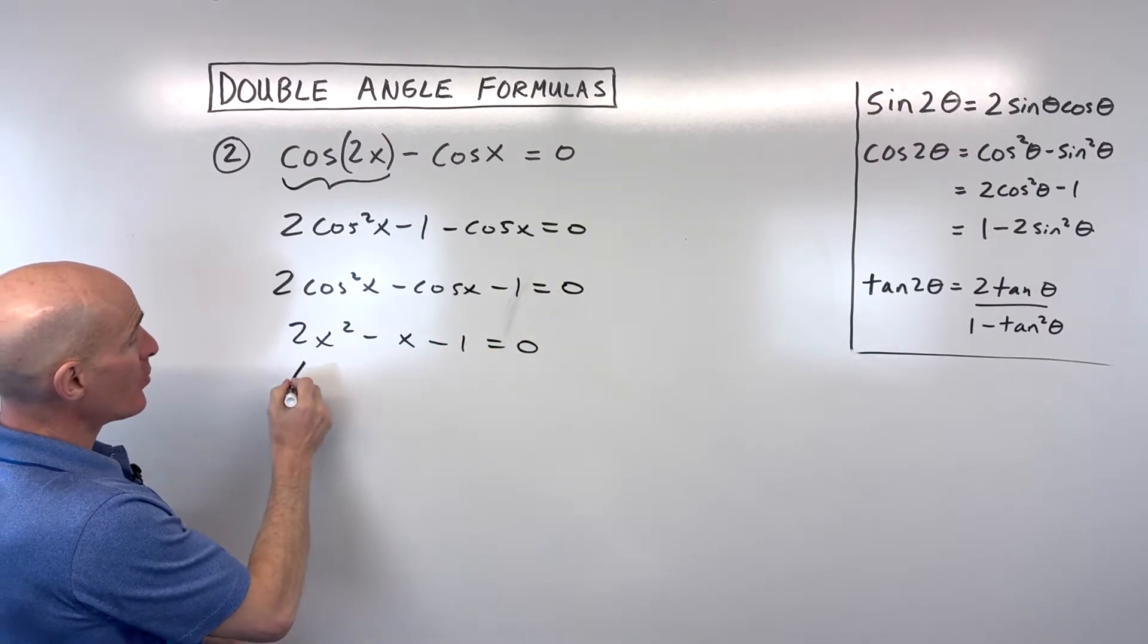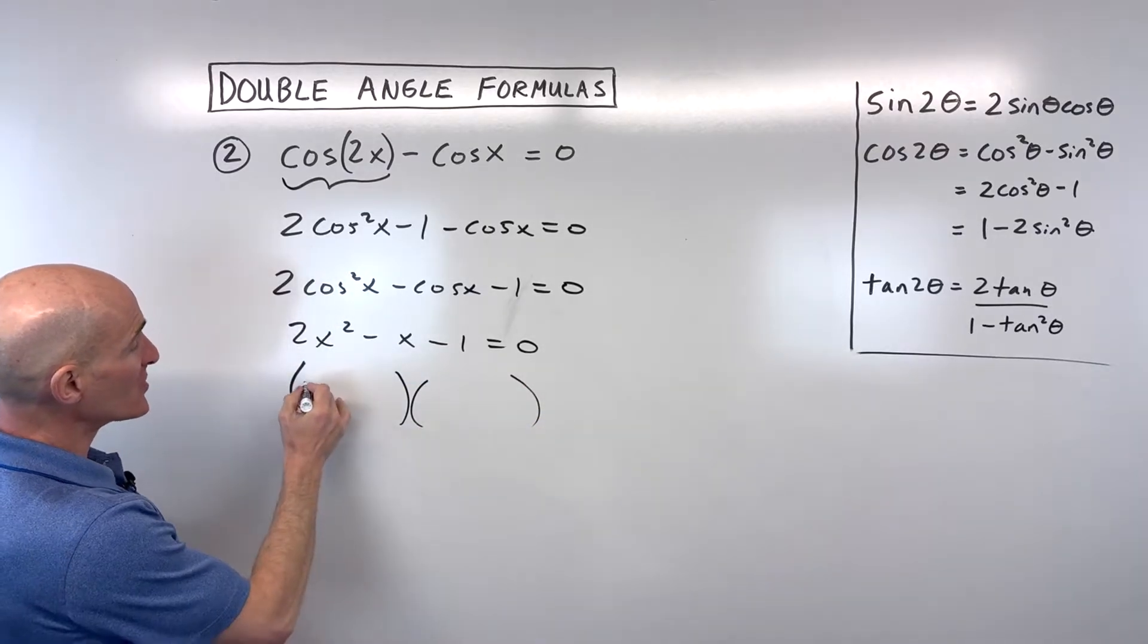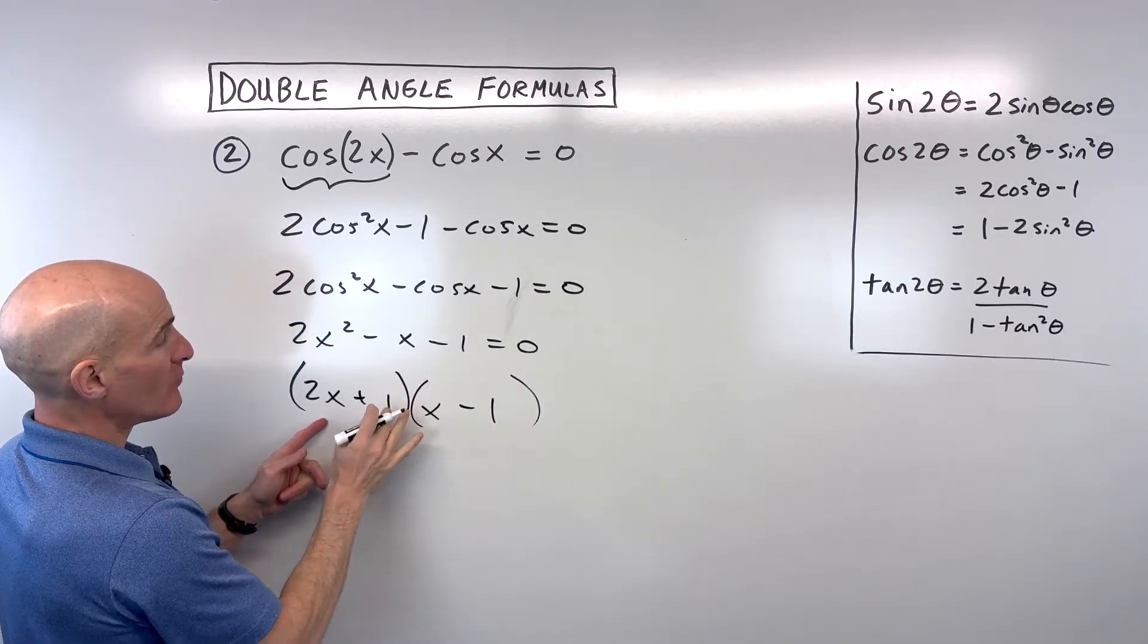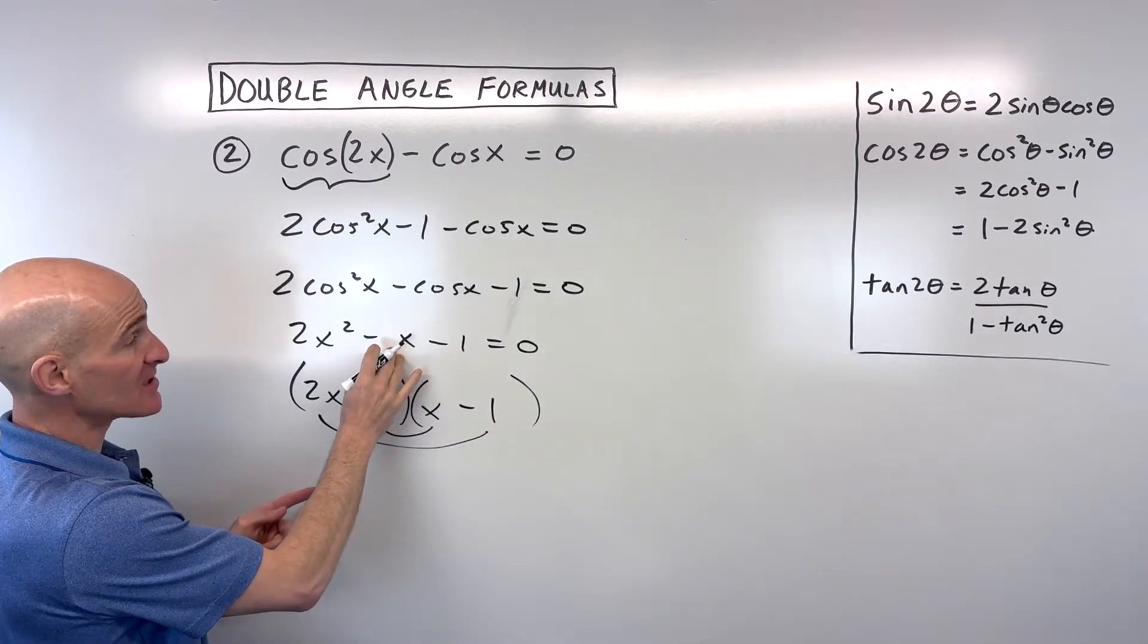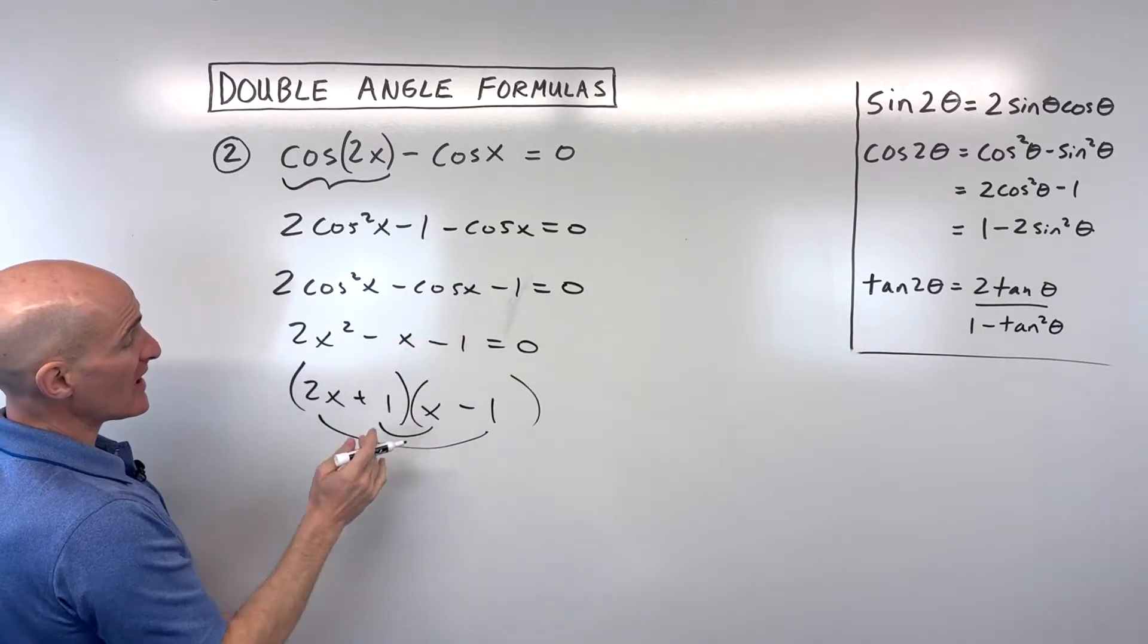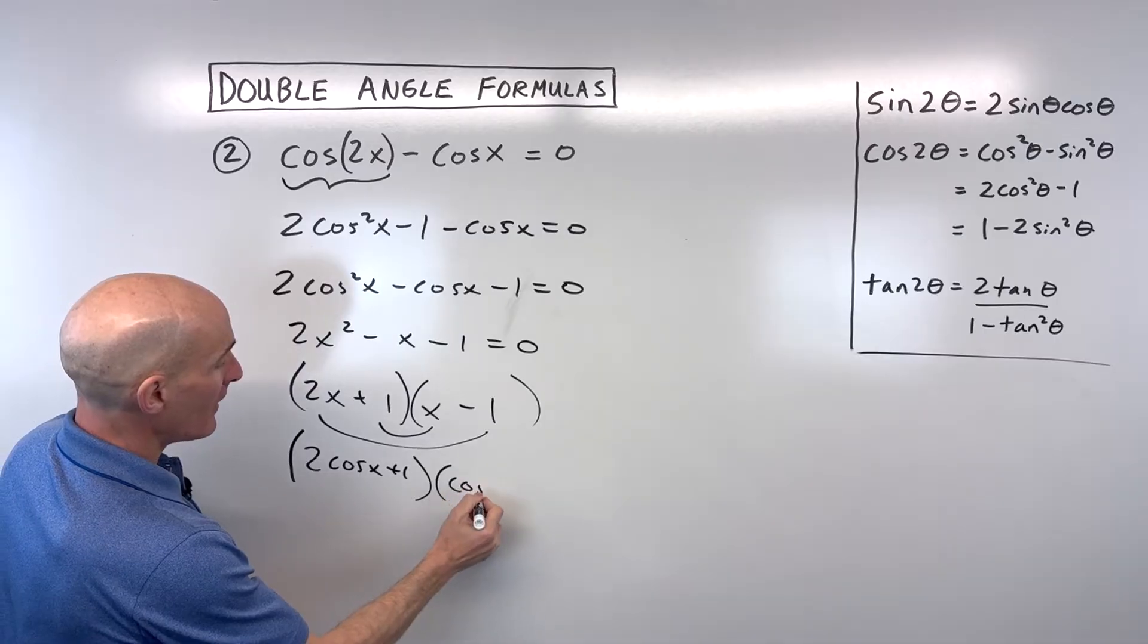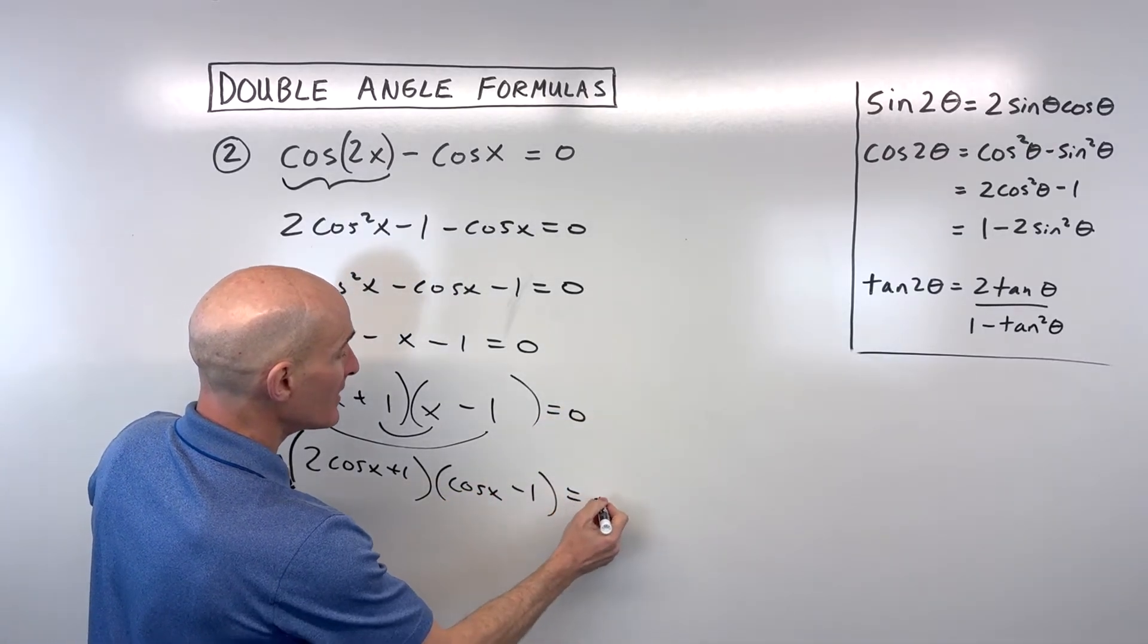Now doesn't this look a lot like a quadratic? Let's see if we can factor it into two binomials. We could say 2x × 1x gives us 2x². Negative 1 × positive 1 multiplies to negative 1, and 1x and negative 2x adds to the middle term, negative 1x. But notice we're not dealing with x's here, we're dealing with cosines of x. So instead of x here, I'm going to write this as (2cos x + 1)(cos x - 1) = 0.